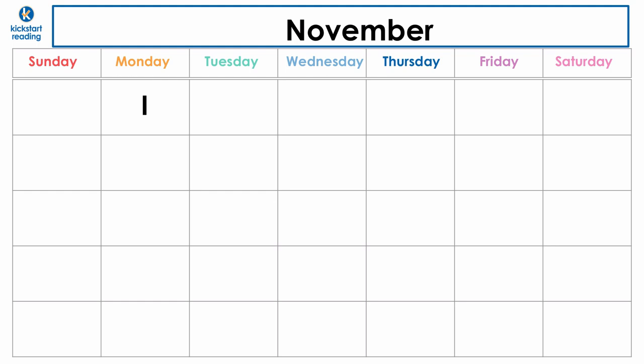Next to it, we're going to write the number two. Three. Four. Five. Six. You're doing great. If I'm going too fast, you can pause the video, and if you make a mistake, that's okay. We're going to go down to the next row.